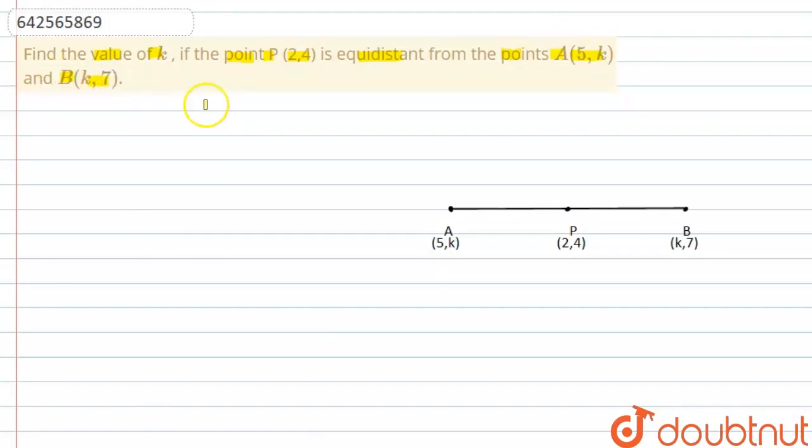So in the question, they are asking us to find the value of k if the point P is equidistant from the points A and B. So here we have shown a diagram. P is in the center and it is equidistant from A and it is equidistant from B.